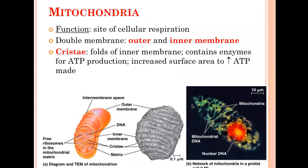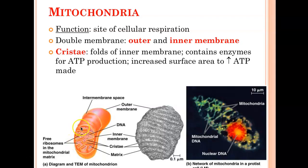Mitochondria is the site of cellular respiration. What are the cristae and why are there so many folds? The cristae are the folds of the inner membrane. Why so many folds? That's where ATP synthesis happens — where the electron transport chain is. So if there are a lot of folds, that increases the surface area to volume ratio and makes it more efficient at making ATP.